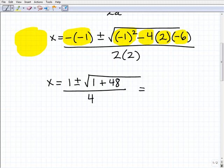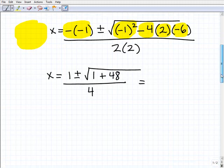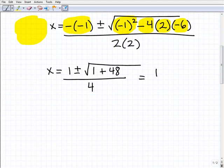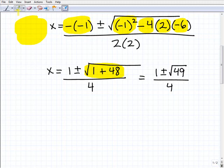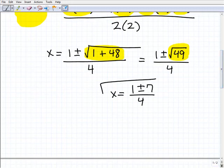So now I'm just kind of taking my time and I'm double checking my arithmetic because this is where you can really get messed up on these problems. I have 1 plus or minus the square root of 1 plus 48, of course, is 49 over 4. Now, I need to take the square root of 49 and that's going to be plus or minus 7. So I'm going to get 1 plus or minus 7 over 4. So x is going to be equal to this expression right here.